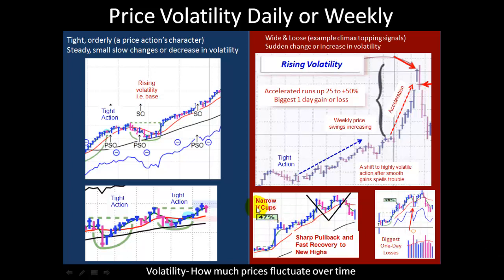Another example of increasing volatility would be a narrow or V-shaped cup, or a sharp pullback and a fast recovery to new highs. Here's an example of the biggest one-day loss you can see. The important thing about understanding volatility is you have to look at each stock individually and identify on a chart its character or behavior. Some stocks tend to have wider price swings more so than others, so you have to look at each stock and get a sense of how it behaves normally so you can identify when a change is underway. Another helpful way to evaluate volatility is to look at the stock's ATR, average true range.